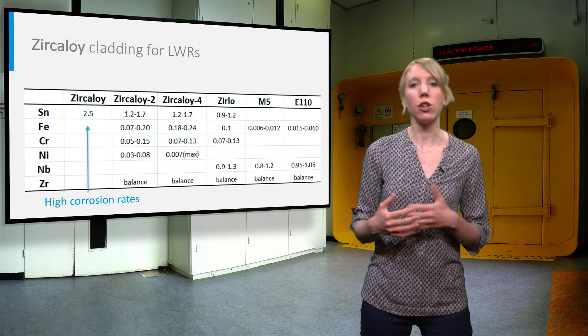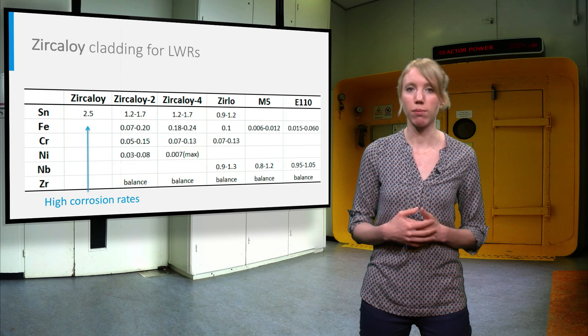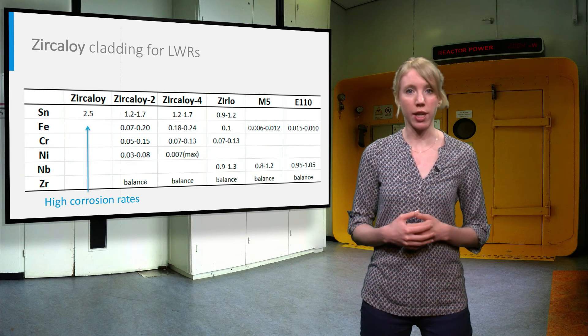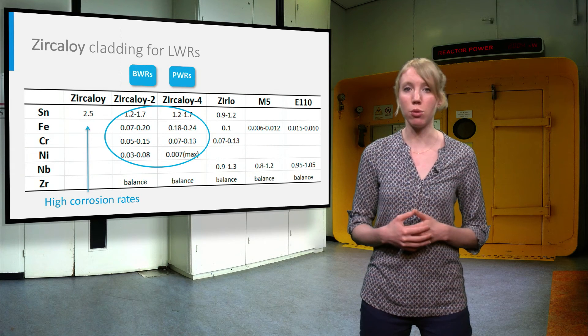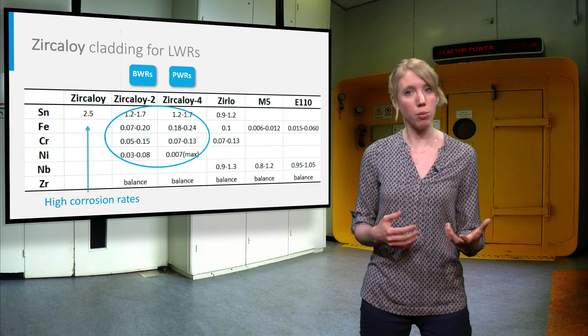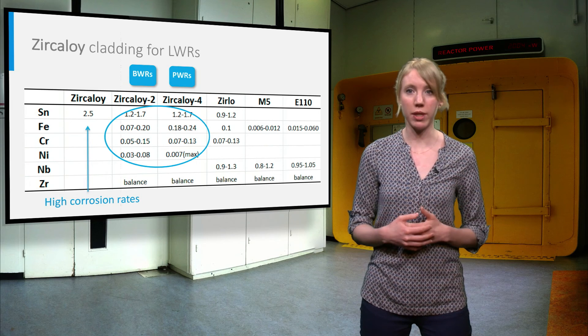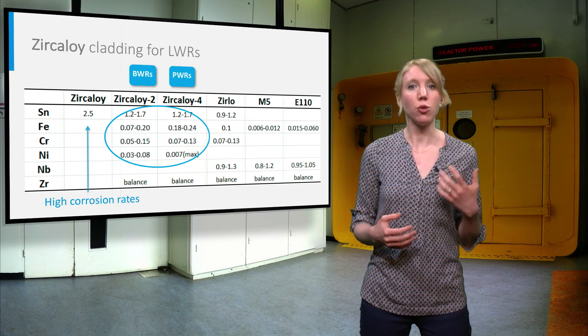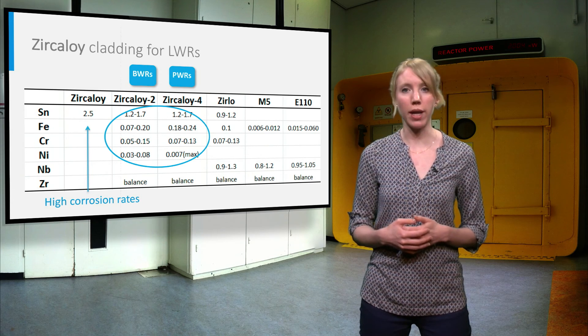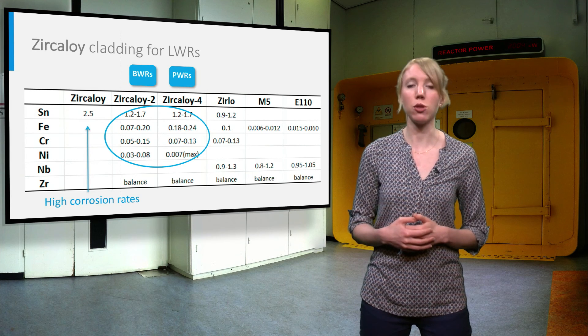But this alloy did not have a high corrosion resistance towards the cooling water. Other forms of zircaloy have therefore been introduced, in which small additions of iron, chromium, and nickel significantly improve the properties. Zircaloy-2 is used in boiling water reactors, while zircaloy-4 is used in pressurized water reactors.